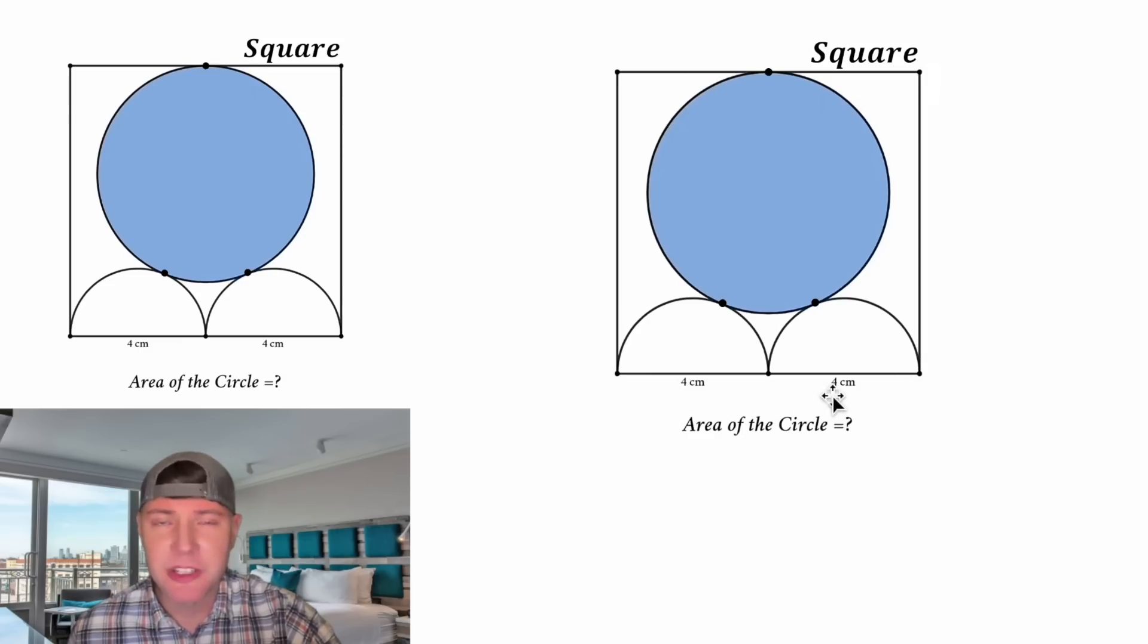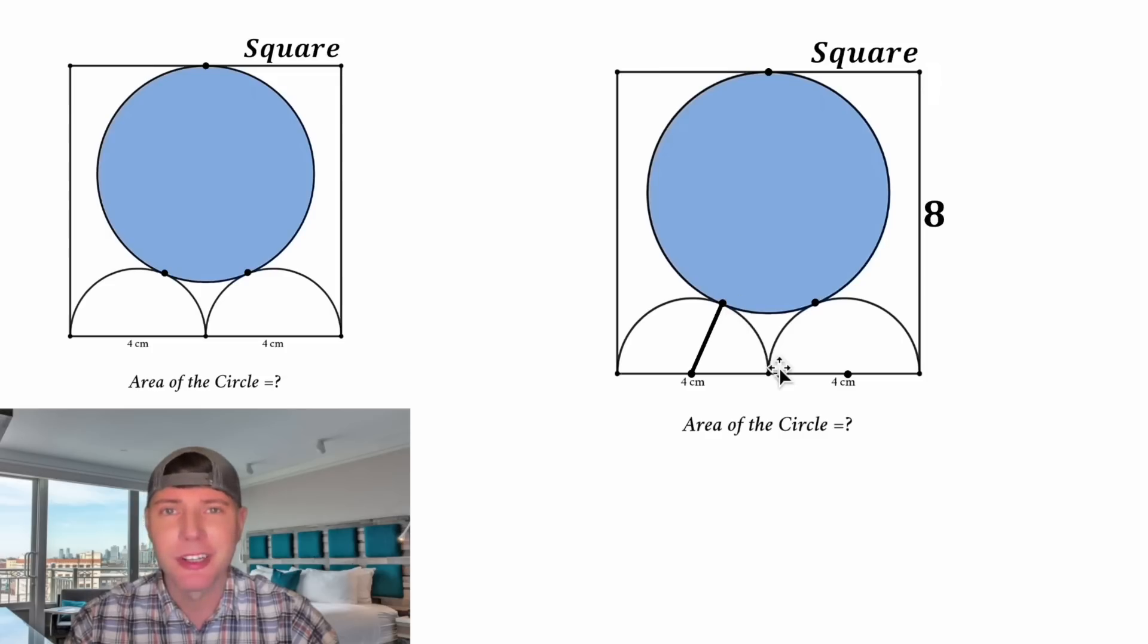We're given a square, which means all the sides are the same length. If the bottom is equal to eight, this height is also going to be equal to eight. And then from here, let's mark the centers of the two semi-circles. And let's connect the center to this tangent point. Since the diameter is equal to four, the radius will be equal to two. And the exact same thing for this radius, it will also equal two.